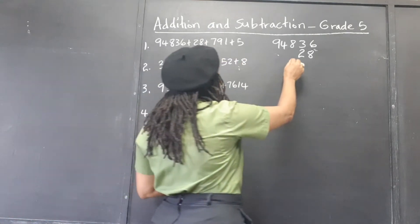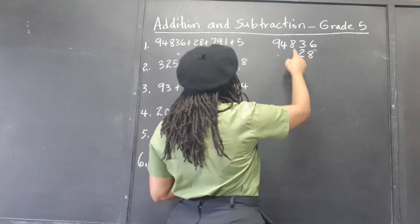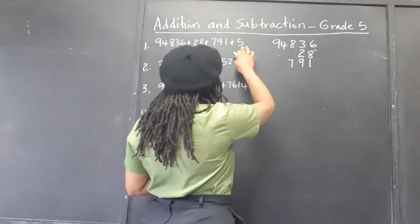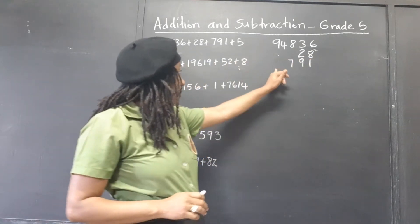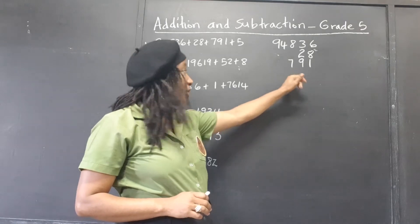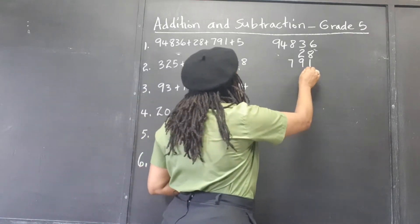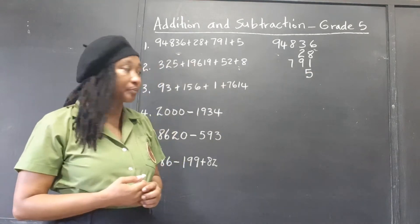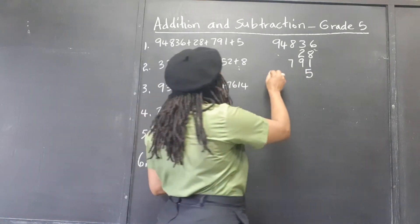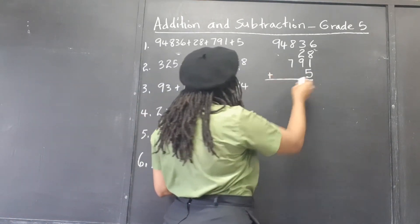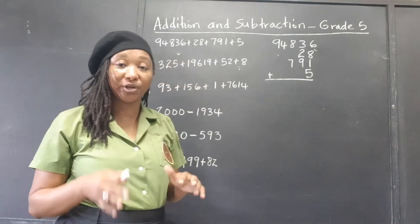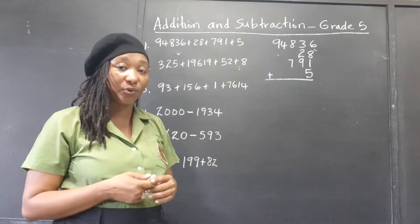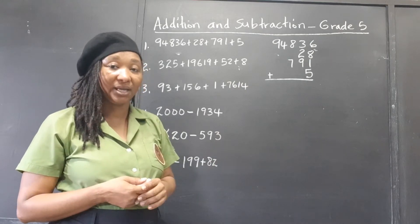791 — so that's 700 under the hundreds place, 91. And 5 — you can't put it out here or anywhere else; it has to go under the ones. So now you are ready to add. When you have made sure that you line up your digits under the correct place value, then you can go ahead and add.